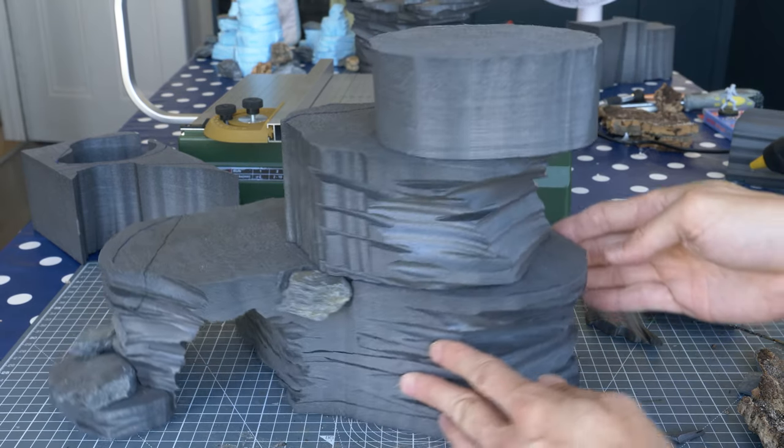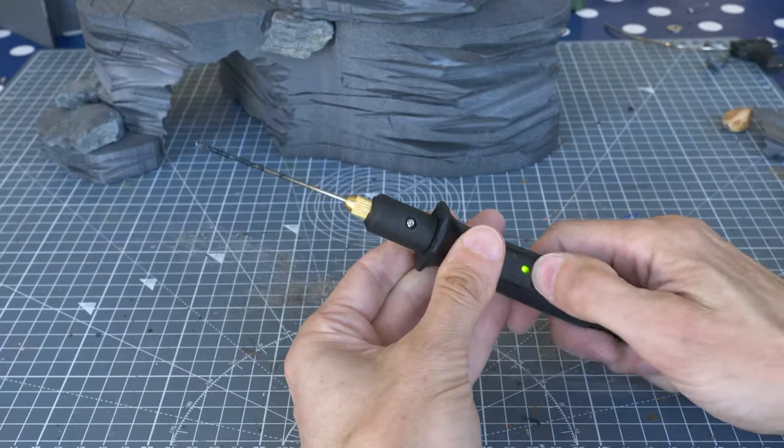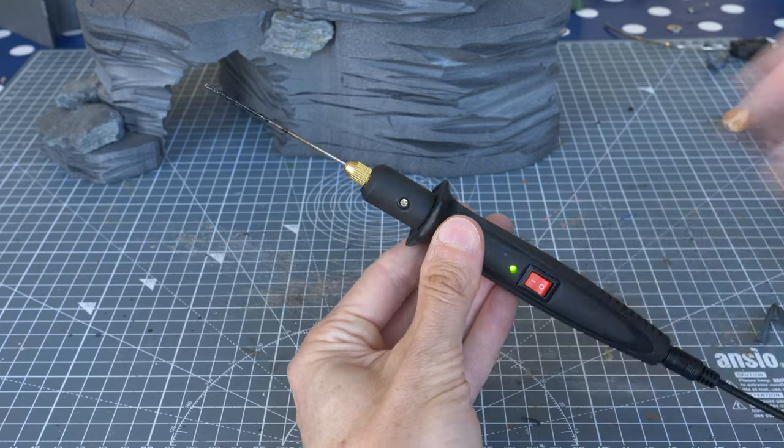And once again, using the wand attachment to bore some holes and slits into the rock, where the Geonosians may have built their hives.